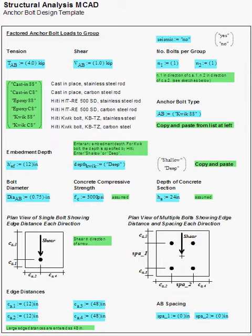There are three types of anchors that can be selected: cast-in-place threaded rod, Hilti HIT RE500SD, which is an epoxy anchor system, and Hilti Quick Bolt KB-TZ, which is a mechanical anchor. Each type of anchor can be either carbon steel or stainless steel.